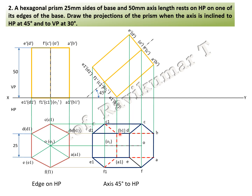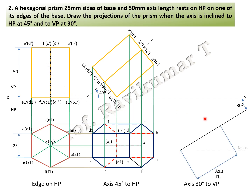Next, to construct the locus, find the true length — it is already given as 50 mm. Then find the apparent length. True length is between O to O, and the apparent length is also between O to O. Take a 30-degree inclination line, use the true length and mark the point, then draw the locus line. Take the apparent length, cut an arc, and join the line between the arc and the center point. O and O1 is the axis of the hexagonal prism.